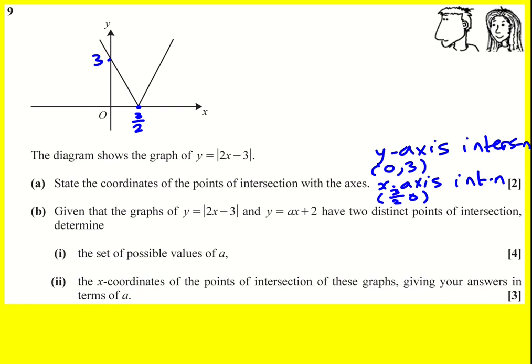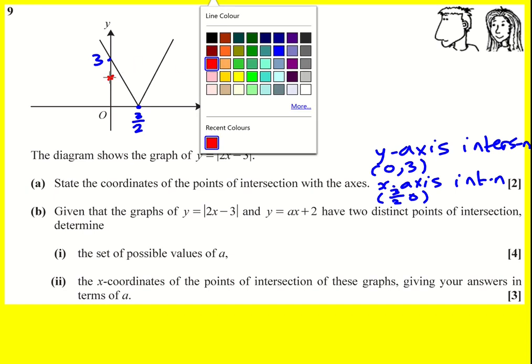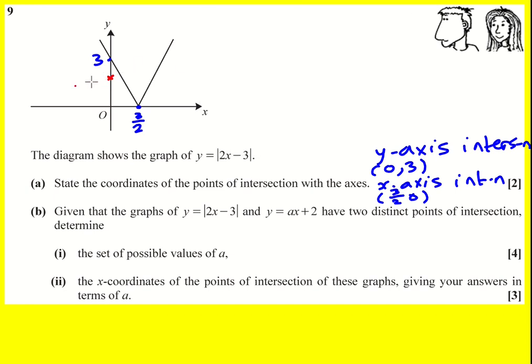We're not told an awful lot, we need to think about this. We know for sure that the straight line is going to go through 2 on the y-axis. As a starting point, it's worth bearing in mind when we're going to get two points of intersection. When it's here we will, but as we bring it down there's this point where we only get one, so here it would be two and suddenly we only get one.